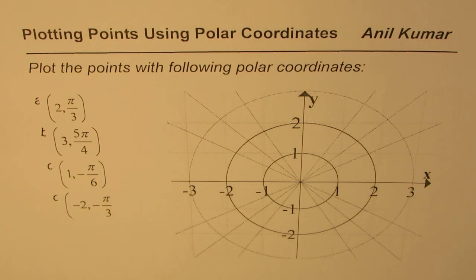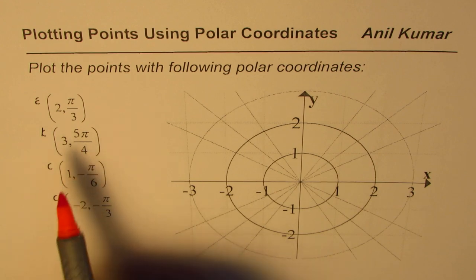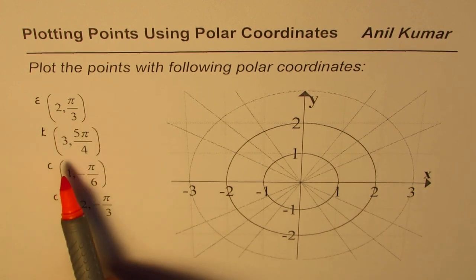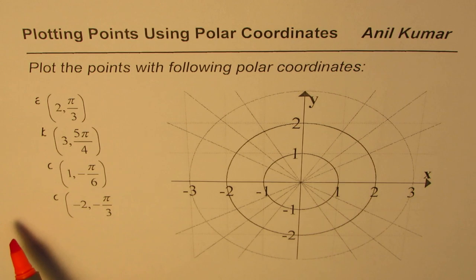Anil Kumar sharing with you a practice test. We need to plot the points for the given polar coordinates. The first one here is (2, π/3), the second one is (3, 5π/4).